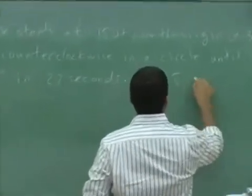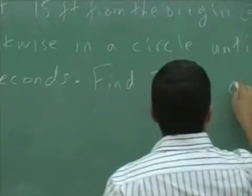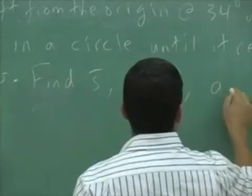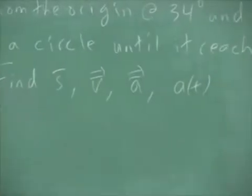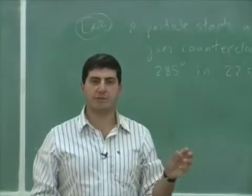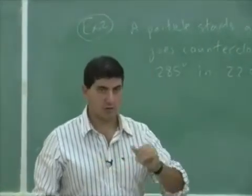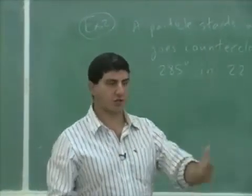For this I want us to do right here: average speed, average velocity, average acceleration, and instantaneous acceleration. We're going to be able to see some stuff from here. This one is also going to act like an introduction to the topic of circular motion because the particle is going in a circular motion.